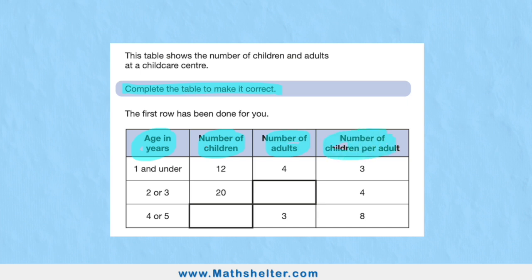In the one-and-under category, there are 12 children, there are four adults, therefore there are three children per one adult. Let's see how that makes sense. For 12 children—one, two, three, four, five, six, seven, eight, nine, ten, eleven, twelve—number of adults, we have four.